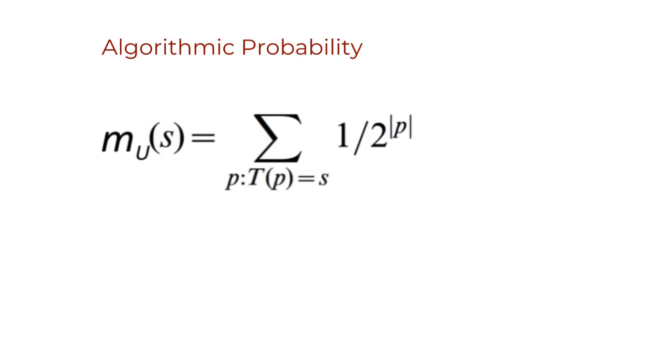For this reason, this measure of algorithmic probability is also called a semi-probability measure, or just semi-measure in short, and can formally be defined as follows.